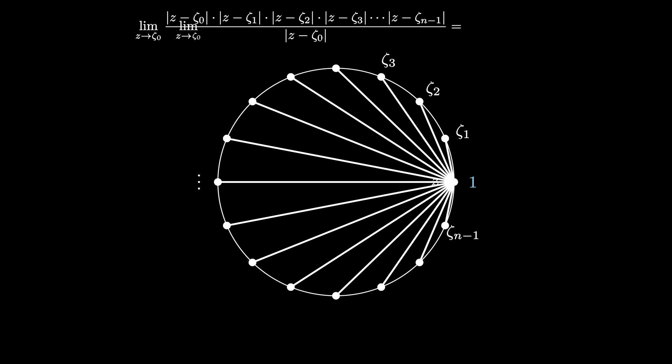But ζ₀ is 1, so we're looking at the limit as z approaches 1 of (z^n - 1)/(z - 1). Once again, (z^n - 1)/(z - 1) is the polynomial running over the sum of the integer powers of z up to n - 1. We can plug 1 in, and we end up with the sum of n copies of 1, so we get a product of n.